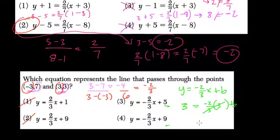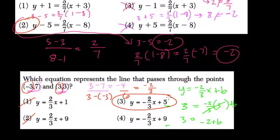These 3's cancel out. Negative 2 plus b equals 3. And the answer, if you add 2 to both sides, is 5. So here we should get choice number 3, where it's negative 2 thirds x plus 5.